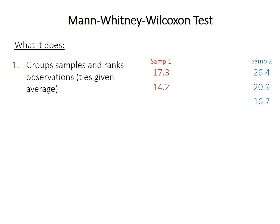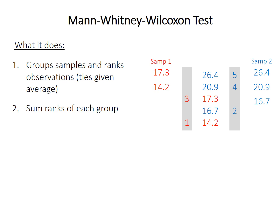I'll walk through a step-by-step demonstration of the procedure. First, it combines the data from each sample into one group and converts the raw data into ranks, so the smallest value gets rank one, the second smallest gets two, and so forth. Next, it sums up the ranks of each original sample. In this example, we get a rank sum of four for sample one — it has the first and third smallest values — and eleven for sample two.